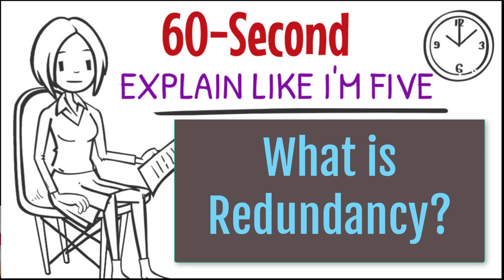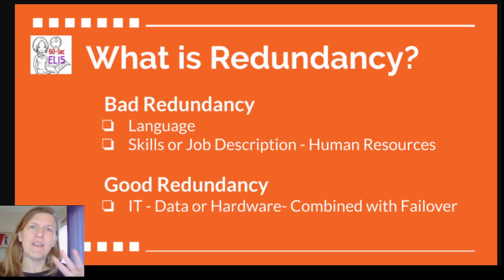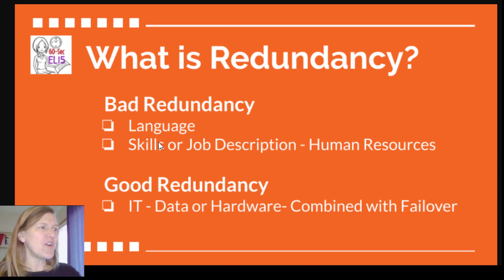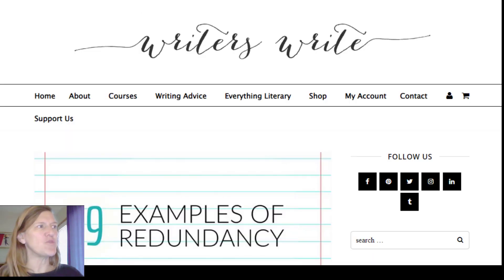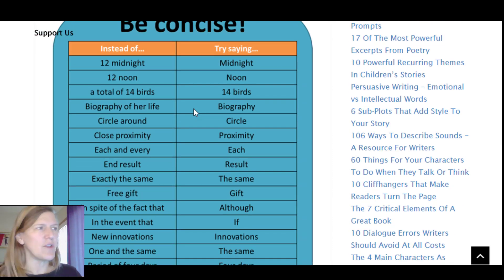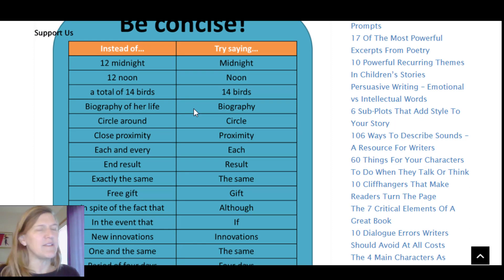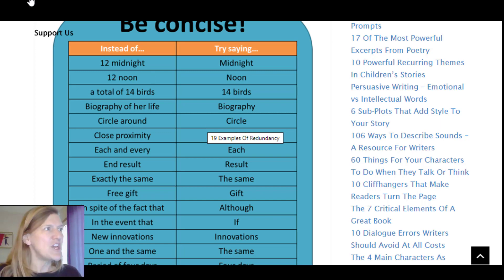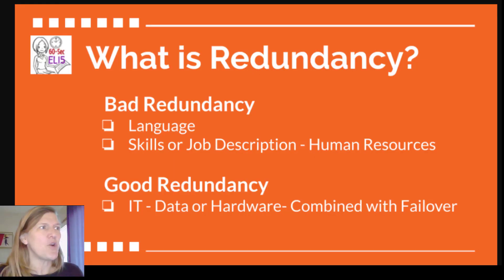What is redundancy? Redundancy means repetition, and there are three ways that we commonly use it in everyday speech. The first two mean something kind of bad. Language redundancy means you're saying something in a way that's unnecessarily repetitious. For example, saying '12 midnight' is bad because midnight is always at 12, or saying 'circle around' is bad because to circle something automatically means to go around it.